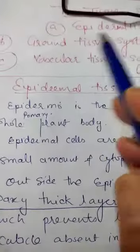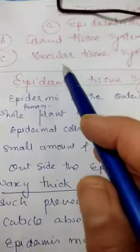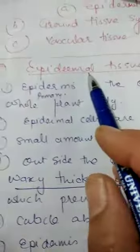Now you come to here. First of all, you see that there are three tissue systems - epidermal tissue system, ground tissue system, and vascular tissue system. First we are here taking the epidermal tissue system.